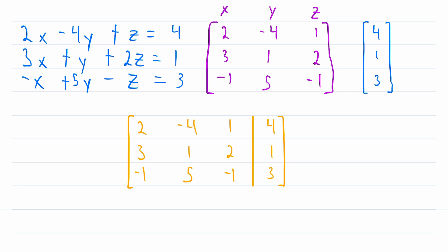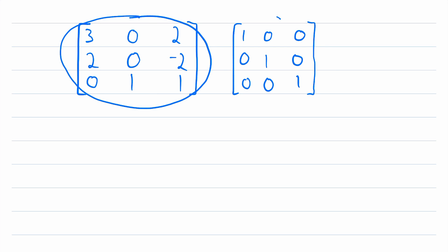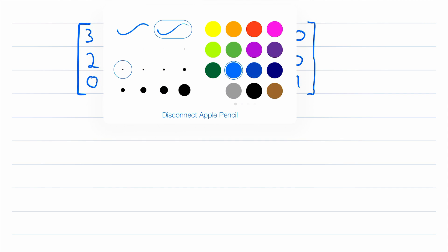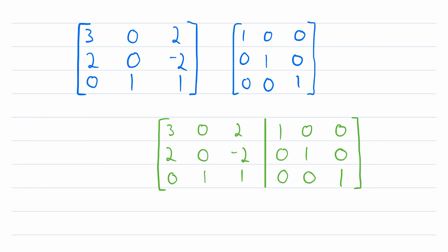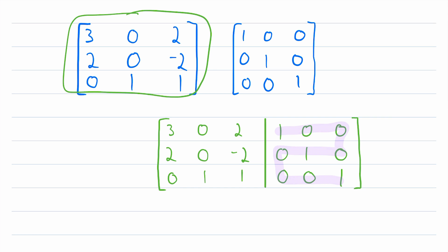If we perform what are called row operations on this matrix until this side looks like the identity matrix, then we'll have the solutions to this system of equations on this side. We'll certainly go over how to do that in detail in another lesson. Another cool way we can use augmented matrices is to find inverse matrices. Here we have a three by three matrix, and here is the identity matrix with three rows and three columns. We can augment this matrix with the identity matrix, and by performing row operations so that this side looks like the identity matrix, what we'll have left over here is actually the inverse of the original matrix.